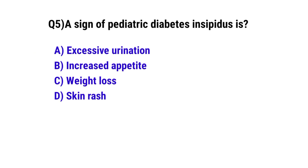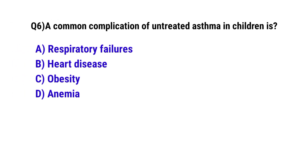Question 5: A sign of pediatric diabetes insipidus is — the correct option is A: Excessive urination. Question 6: A common complication of untreated asthma in children is — the correct option is A: Respiratory failure.